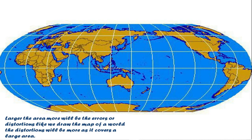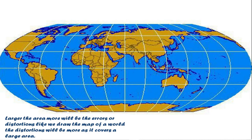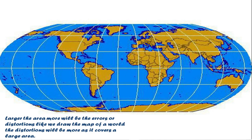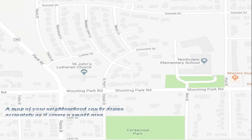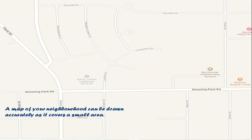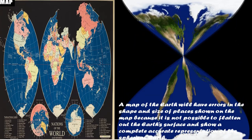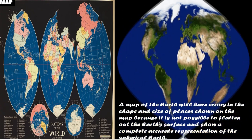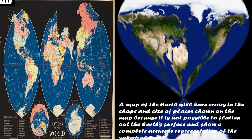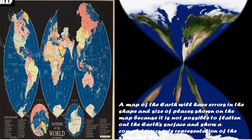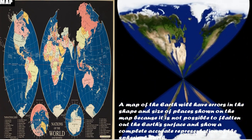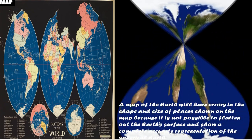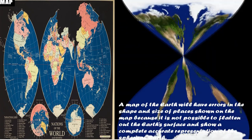Larger the area, more will be the errors or distortions. For example, if we draw a map of the whole world the distortions will be more, because it covers a large area. Whereas if we draw a map of your neighborhood, it can be drawn more accurately because it covers a small area.